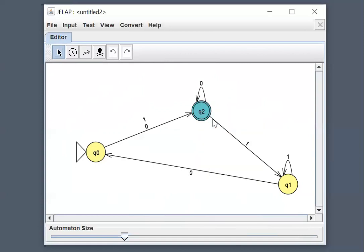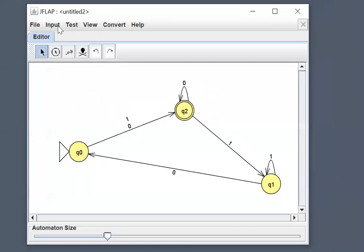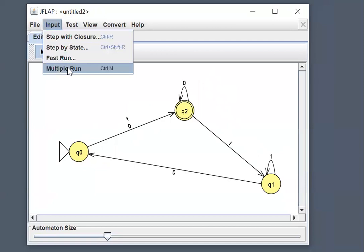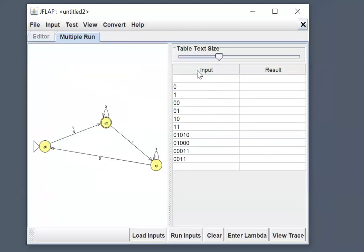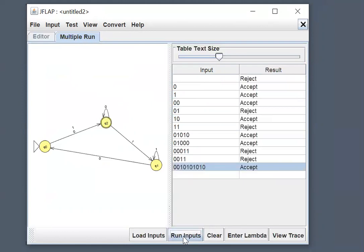But that's not really interesting to test. Let's make it interesting. Let's say right-click on q2 and select final, so now it's a final state. Now let's test the input. To test the input, just click on Input and then Multiple Run. Here I already have a couple of runs inserted for me. You can add some more just by hitting enter and writing a bunch of zeros and ones. Now if I want to see which ones are accepted, which ones aren't, I just say Run Inputs.